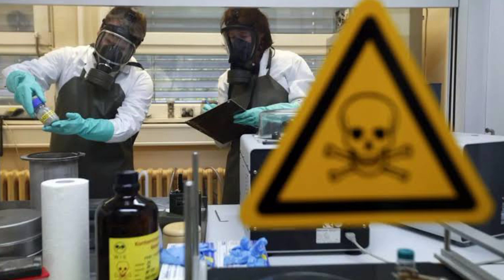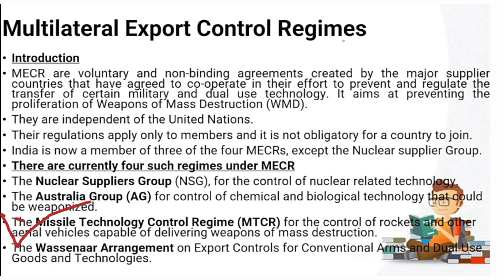The MTCR, or Missile Technology Control Regime, is focused on controlling rockets and other aerial vehicles capable of delivering weapons of mass destruction, including rockets and drones. The Wassenaar Arrangement covers export controls for conventional arms and dual-use goods and technology.